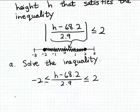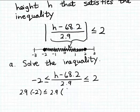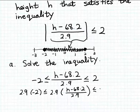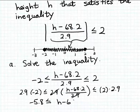Solving this compound inequality for h is relatively straightforward. First, we clear the fraction by multiplying all three parts of the compound inequality by the denominator, 2.9. Multiplying the left side gives minus 2 times 2.9, which is minus 5.8. The 2.9s in the middle cancel, leaving just h minus 68.2. And on the right side, 2 times 2.9 gives positive 5.8. So we have: minus 5.8 is less than or equal to h minus 68.2, which is less than or equal to 5.8.